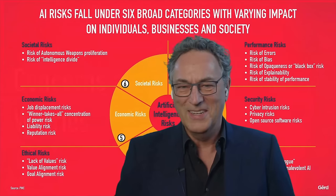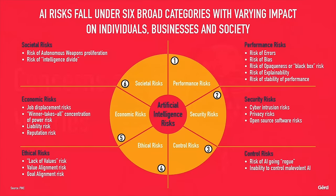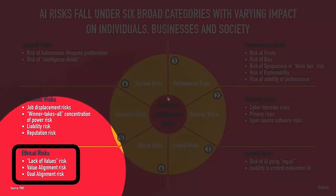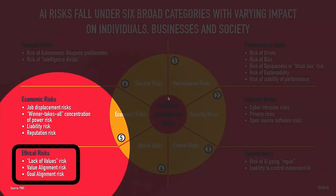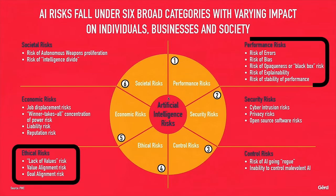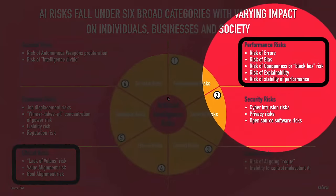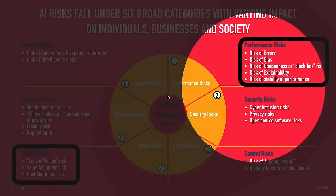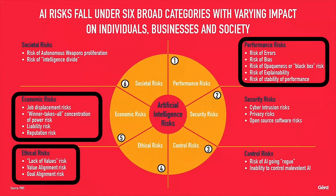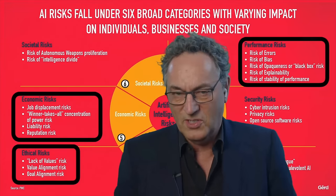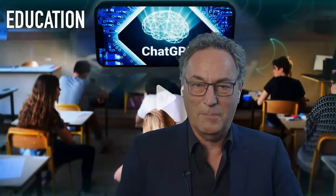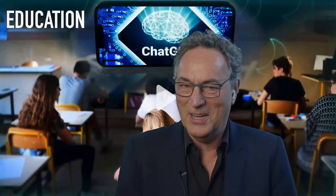Here's a chart from PwC on risks and issues about AI. The ethical risks — the lack of value alignment — this is the biggest risk for me. There's no value alignment, just quick fixes. Then we have performance risk: the risk of error, the risk of bias, the risk of opaqueness — the black box, the explainability. And we have economic risk: job displacement, which is real, though it's mostly about tasks not whole jobs. I estimate we're going to see significant regulation here.